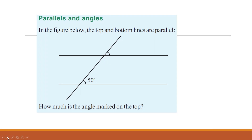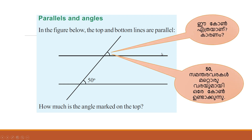Parallel lines and angles — in the figure below, the top and bottom lines are parallel. How much is the angle marked on the top? Let us recall what parallel lines are. Parallel lines are lines which do not meet anywhere and keep the same distance everywhere. Here we are 20 degrees and these are 50 degrees.